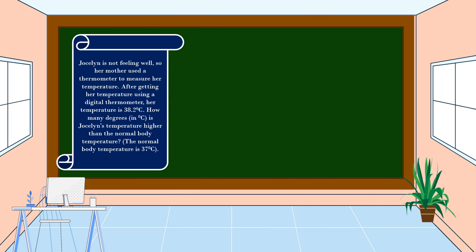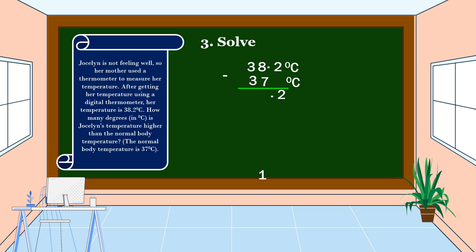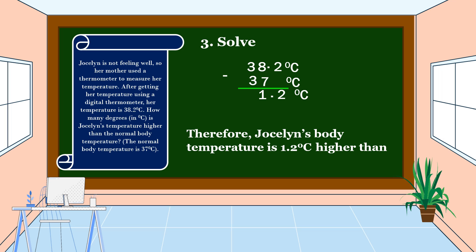Let's carry out the plan. We are going to solve the problem: 38.2 degrees Celsius minus 37 degrees Celsius. Bring down 2, copy the decimal point, 8 minus 7 is equal to 1, then copy degrees Celsius. Therefore, Jocelyn's body temperature is 1.2 degrees Celsius higher than the normal body temperature.